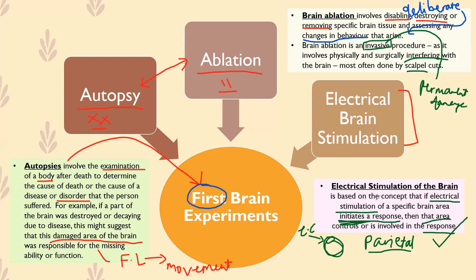Electrical stimulation of the brain, or ESB, is something we do use today — it is safe and ethical because we're not actually opening up the person's brain. We're just running a safe electrical current through the scalp, which is not dangerous or harmful for the patient.